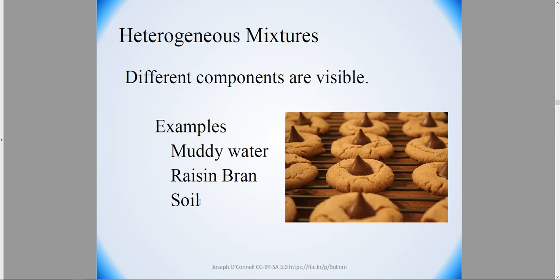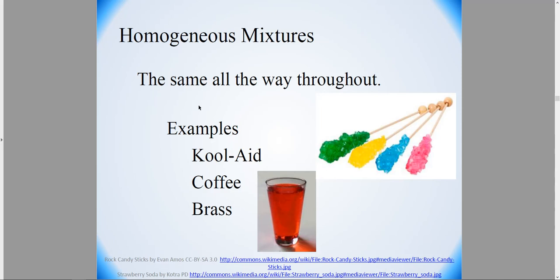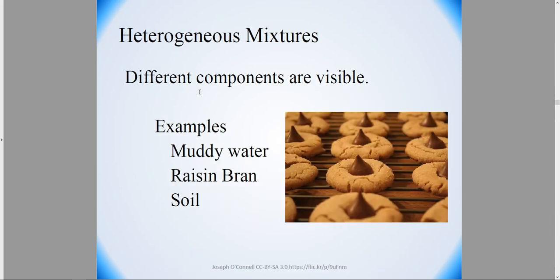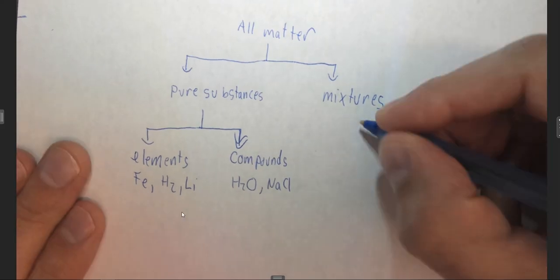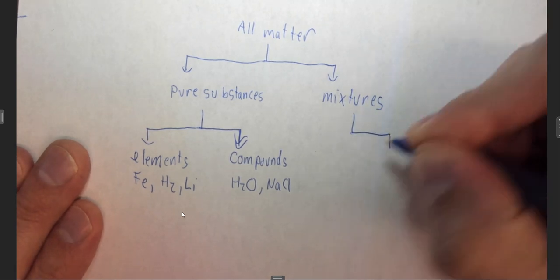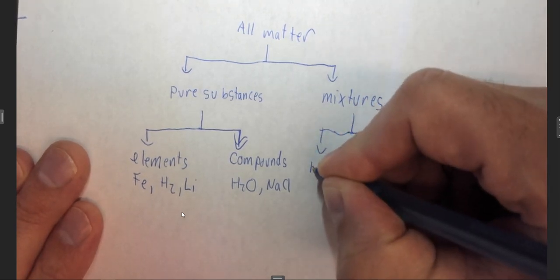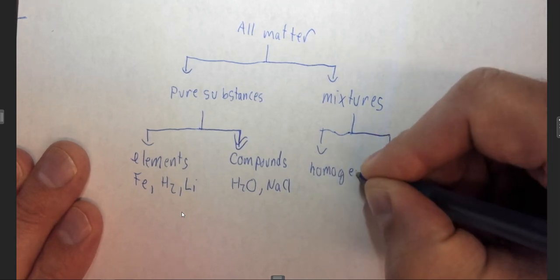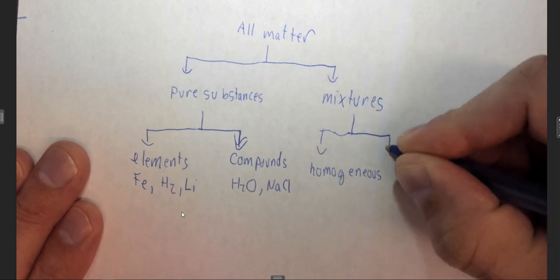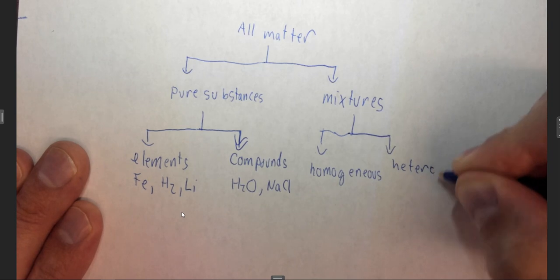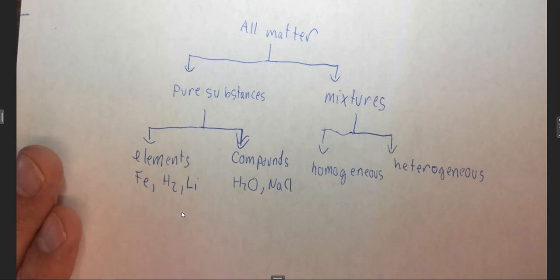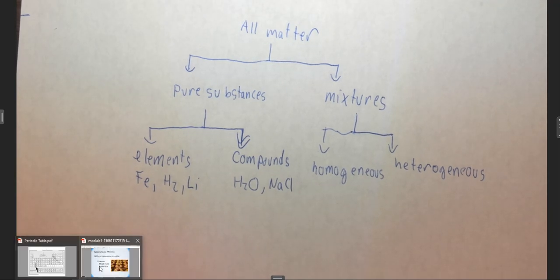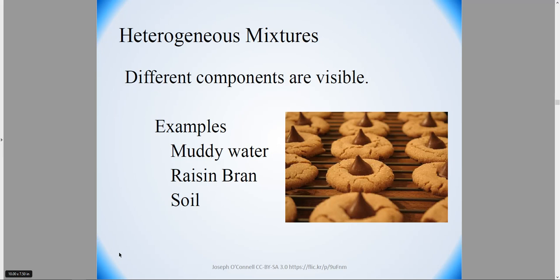So we have these two types of mixtures. Homogeneous mixtures, which have uniform composition, and heterogeneous mixtures, which have a non-uniform composition throughout. So we can further subcategorize our mixtures into homogeneous or heterogeneous.